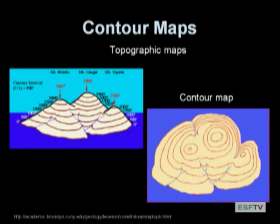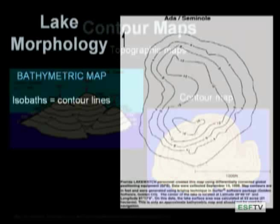Most of you are familiar to some extent with contour maps. A lot of ESF students like to go hiking and many of you have probably used them. If you're climbing up a mountain peak and you reach a region where the contour lines are very close together, you know you're going up a really steep peak. A topographic map like you'd use when hiking is a really good analogy to the kind of maps you'll see for lakes that help you understand the shape of the lakes.